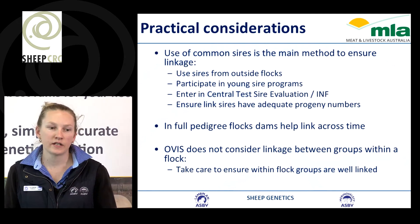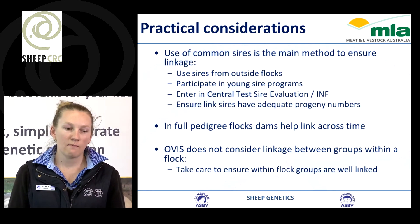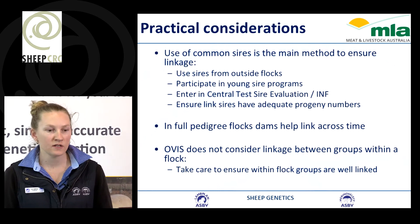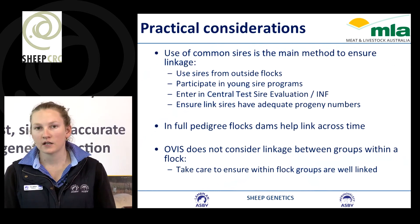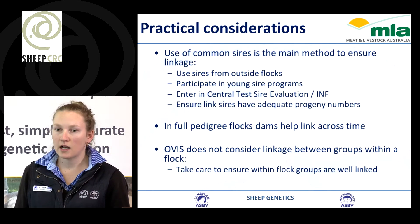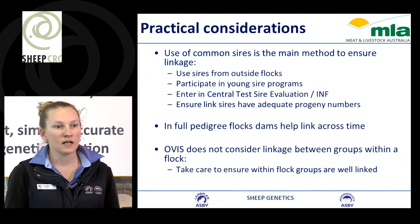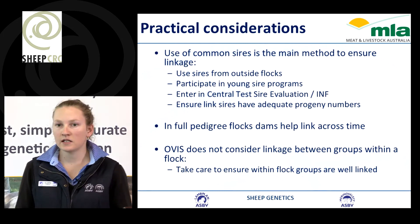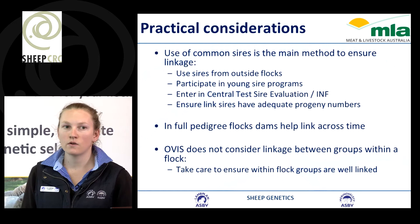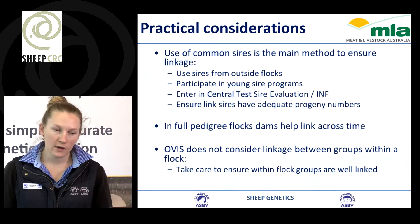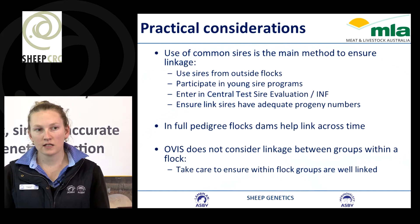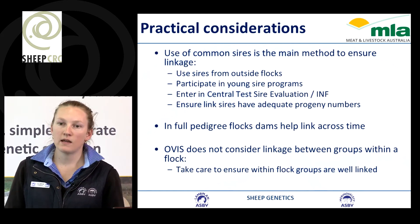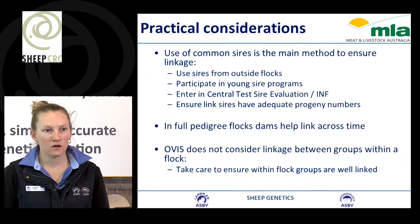Some practical considerations to ensure adequate linkage and account for environmental differences include: using sires from outside flocks, participating in young sires programs where rams are shared across different properties, entering sires into a central progeny test or resource flock, and ensuring that link sires have adequate progeny numbers and are being measured for the traits we're interested in on other properties.